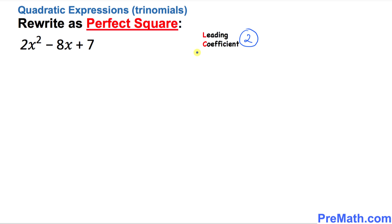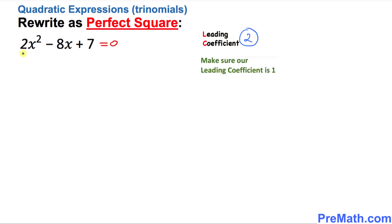The next step is, let's pretend that this given expression equals zero. So we are doing this step just for our convenience to make our job a lot easier. The next step is to make sure that our leading coefficient is 1. To make the leading coefficient 1, just simply divide this term by 2.